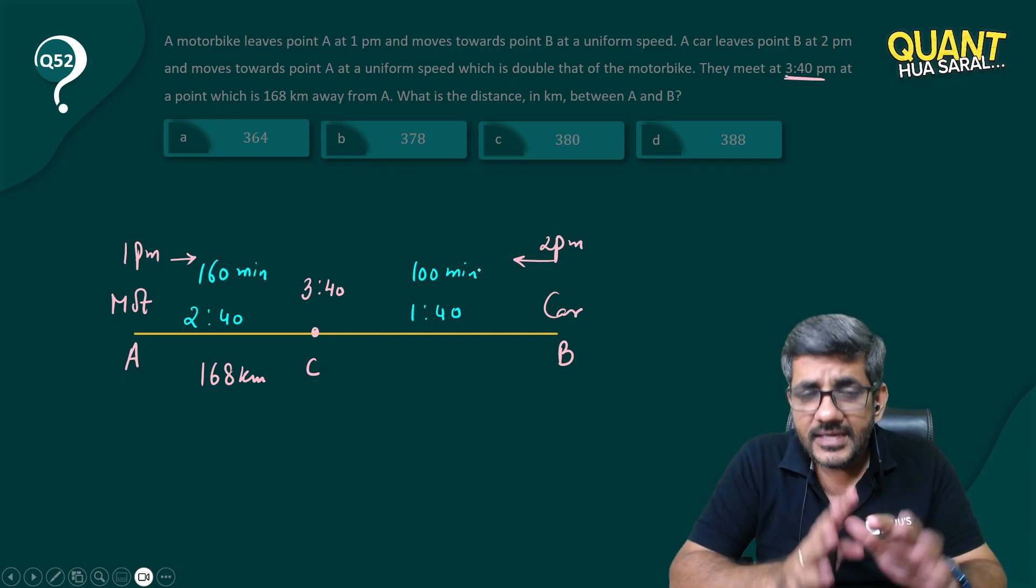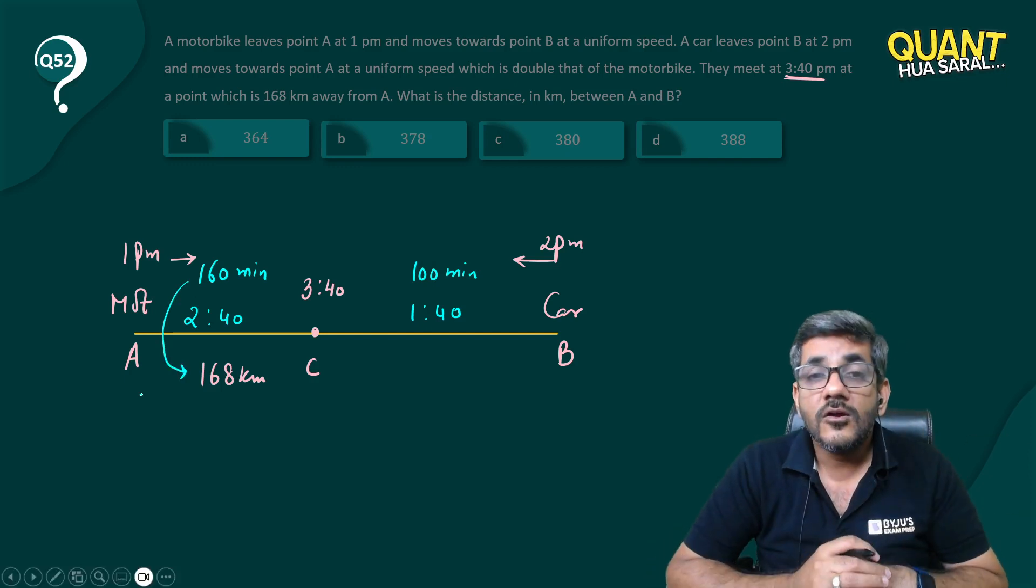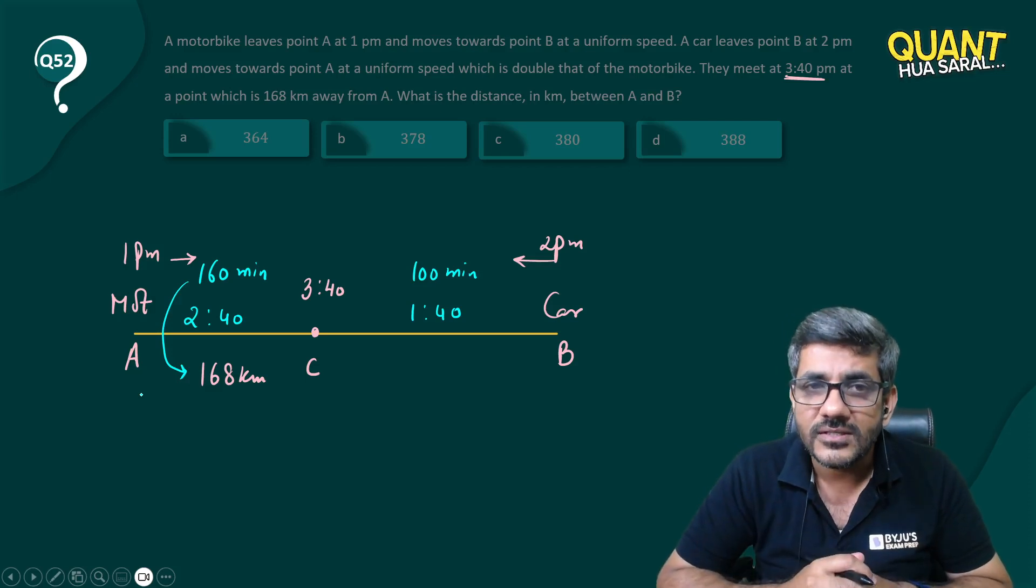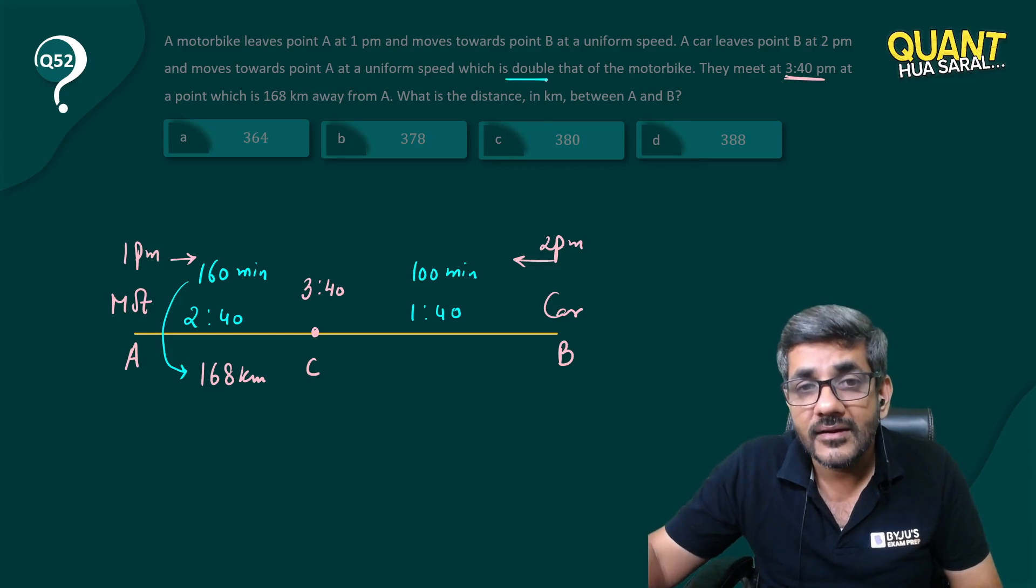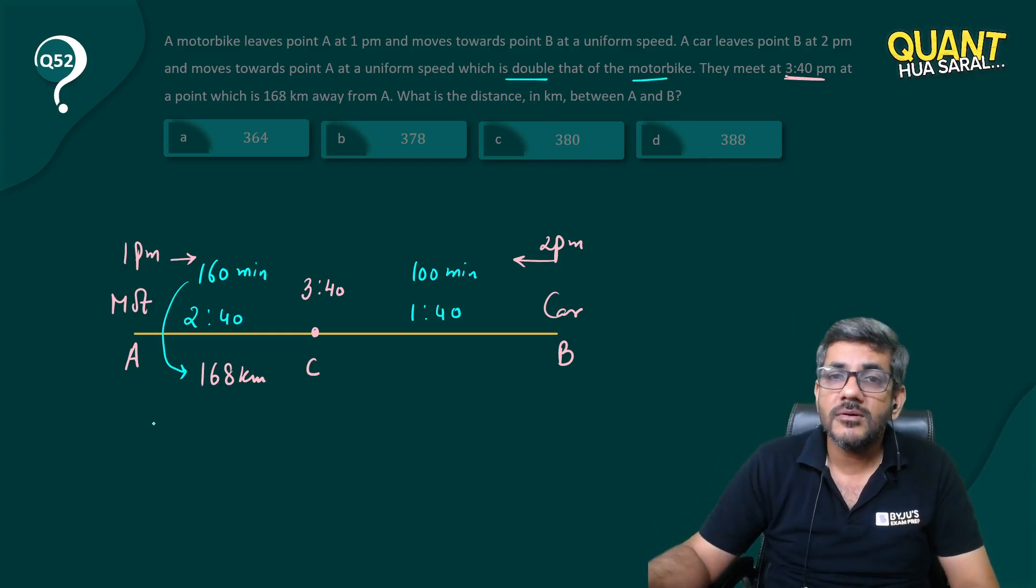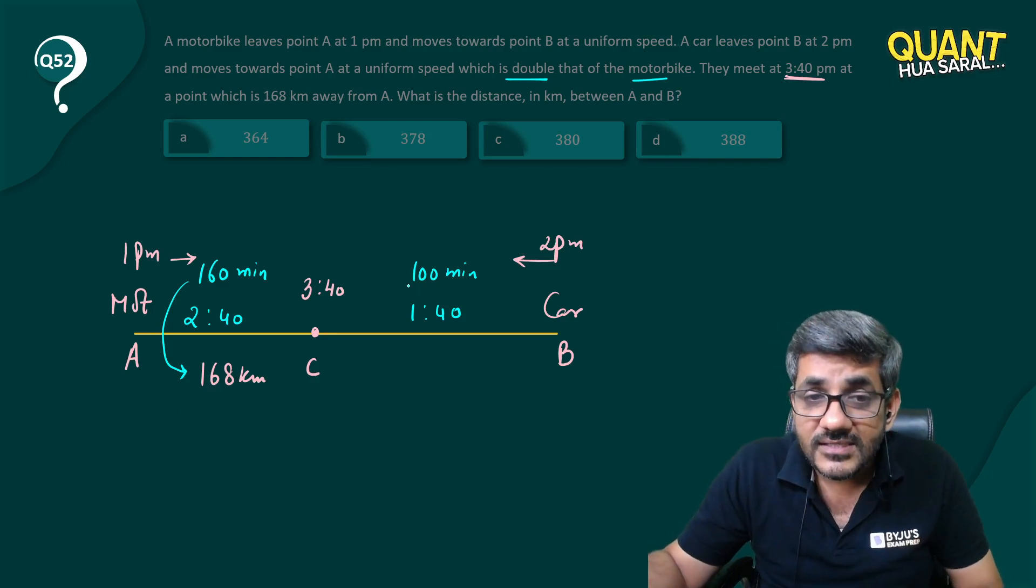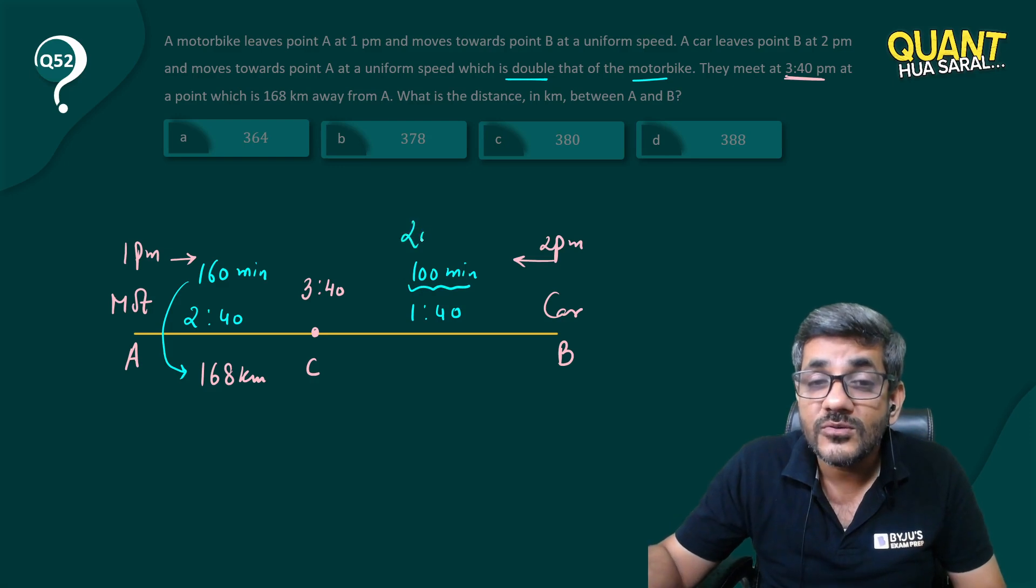Speed of car is double the speed of the motorbike. So can I say if the car covers a certain distance in 100 minutes, the motorbike is going to cover it in 200 minutes? I hope you agree with that. So the total distance between A and B I have to find out. In 160 minutes the motorbike covers 168 kilometers.